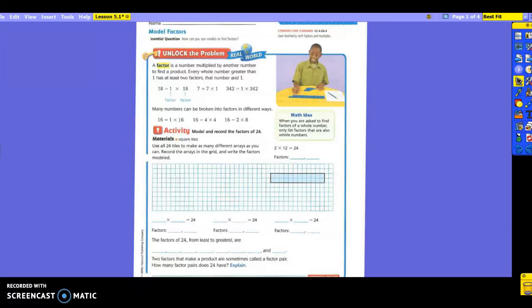We're going to use all these tiles in here, and we're going to use 24 of them to make as many different arrays as we possibly can. And we're going to record them in the grid and write the factors that are modeled. So take a look over here at what they did already. We're going to use this first one as a guide. So take a look at your array that you made. What are you seeing here? Who can tell me what my array says? What's this array saying? If you were looking up here, you can see she has 2 going down, and how many are going across? 12.